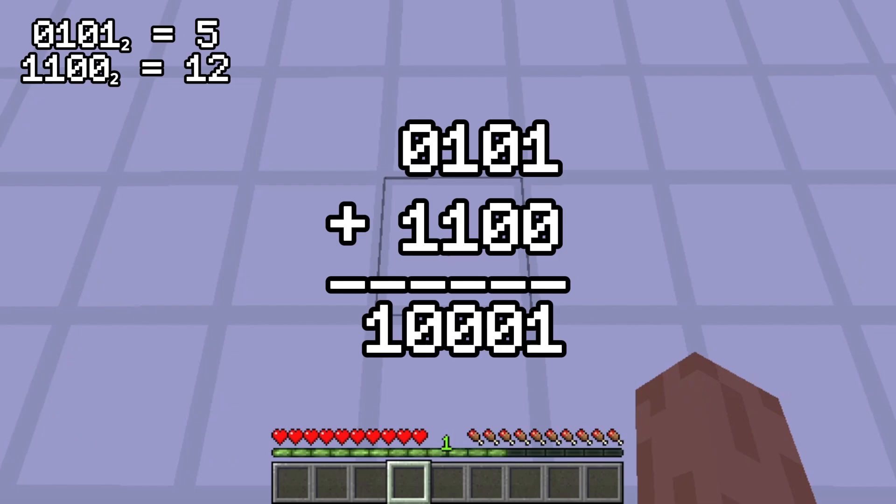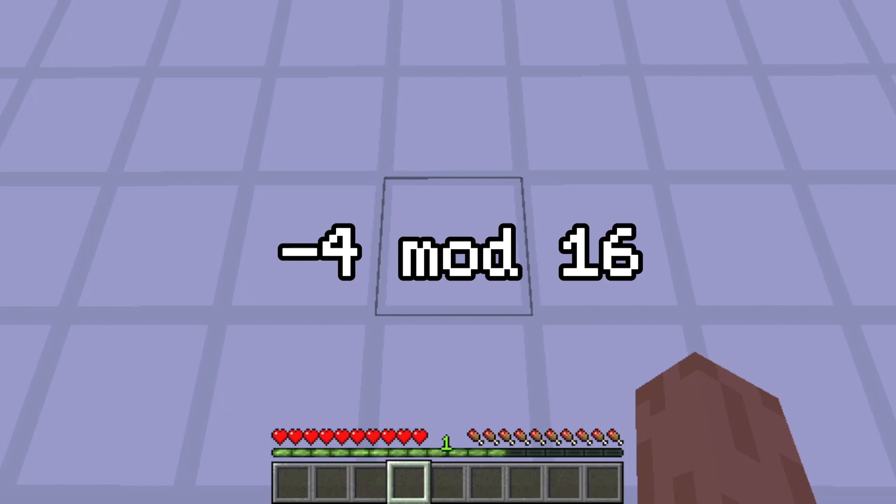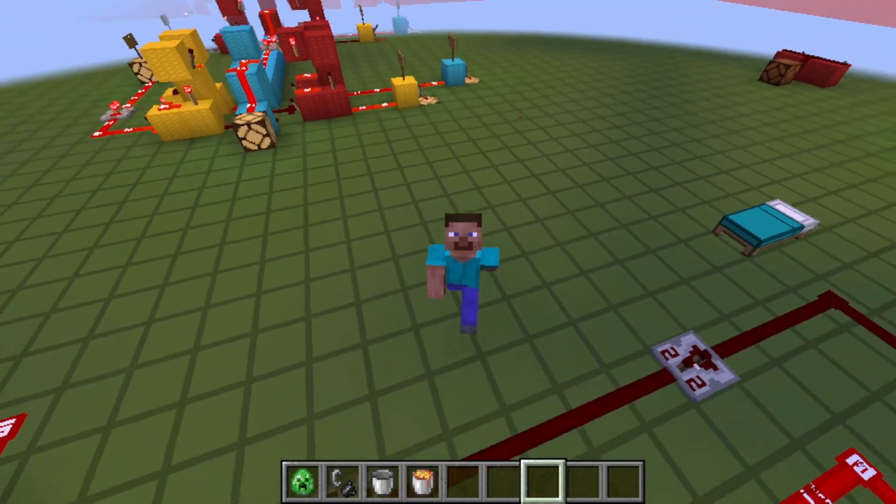Well, minus 4 mod 16 plus 16 is equal to 12 mod 16, and 12 mod 16 is just 12. We can add any multiple of the modulus because we won't be changing the remainder.